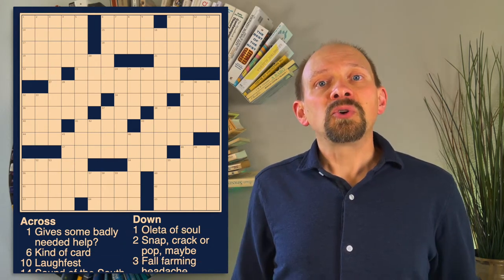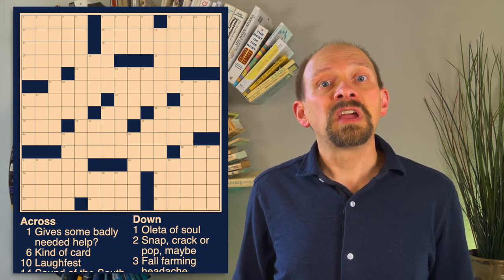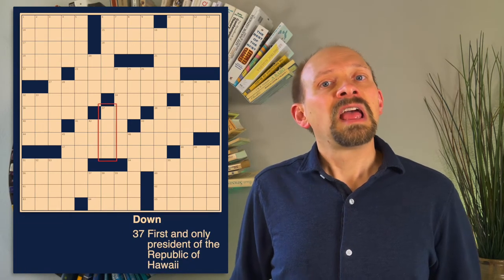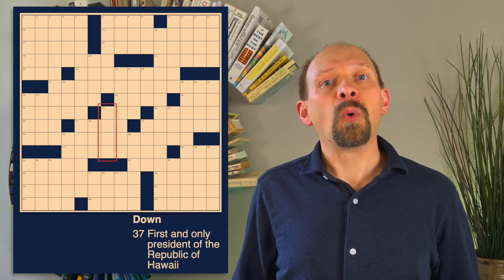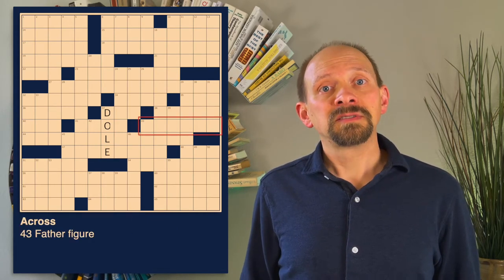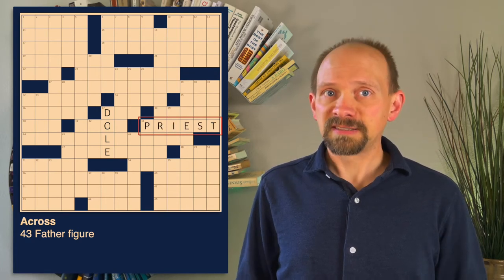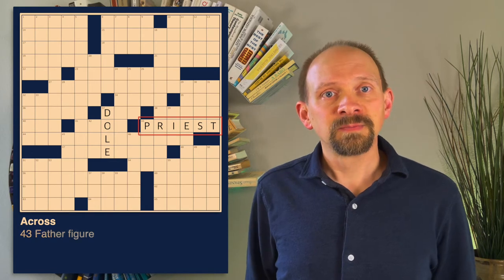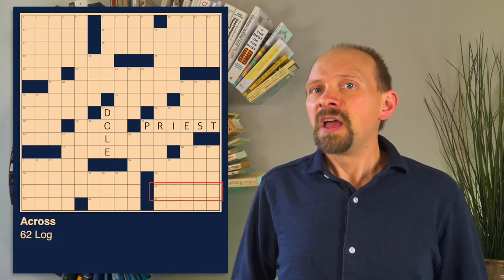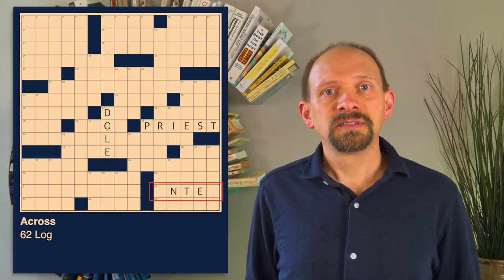In the New York Times crossword puzzle from April 23rd, 2021, clues range from trivia and factoids such as 37 down, first and only president of the Republic of Hawaii, through oblique descriptions like 43 across, father figure, where the answer is priest, to unexpected word senses. The clue for 62 across, log, doesn't reference cut timber but record keeping. The answer is enter.